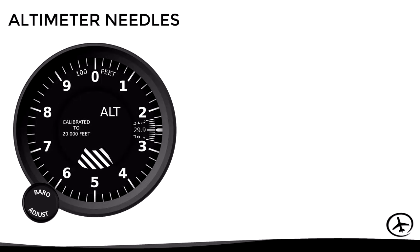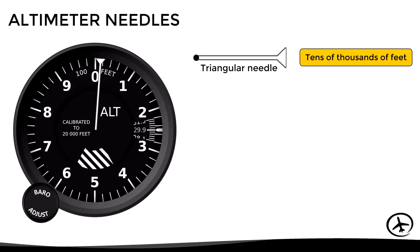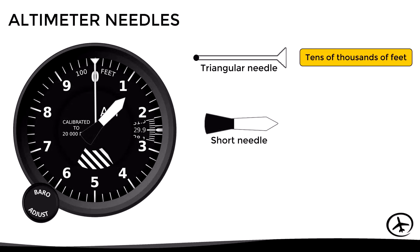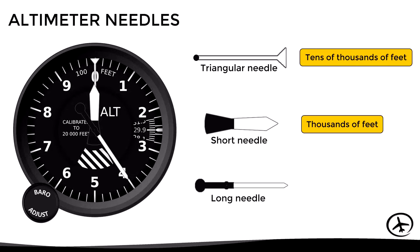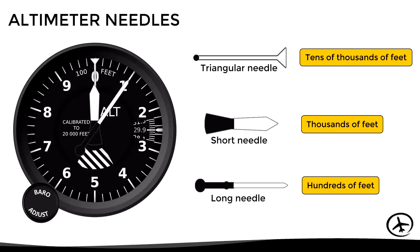Now let's see how the needles of the instrument are interpreted. There is the triangular needle, which indicates tens of thousands of feet — if it points number one, it represents 10,000 feet. Then there is the short needle, which indicates thousands of feet — if it points number one, it represents 1,000 feet. Finally, there is the long needle, which indicates hundreds of feet — if it points number one, it represents 100 feet.